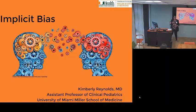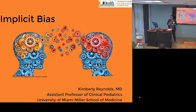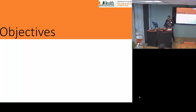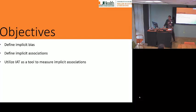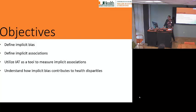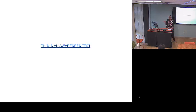I'm glad I asked because I can sort of speed through the basics a little bit and then talk more about what to do about it. Today we'll define implicit bias, define implicit associations, utilize the IAT, understand how implicit bias contributes to health disparities, and I added a part at the end where we'll talk about how to address implicit bias.